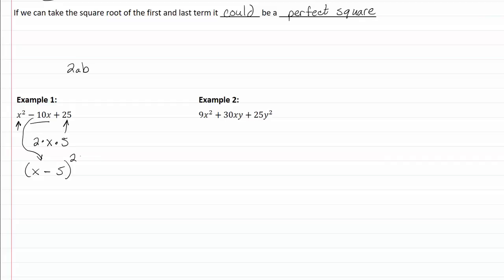If you don't see that right away, it's not a big deal. You can factor using the trial and error method that we had before, but if you can recognize it, it makes it a really nice way to factor something really quick. So let's take a look at example two.